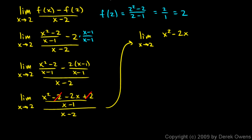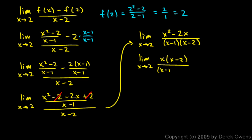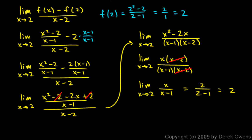The negative 2 and plus 2 cancel, leaving x squared minus 2x in the numerator. The denominator combines to (x minus 1)(x minus 2). The numerator factors as x(x minus 2), so the limit becomes x(x minus 2) over (x minus 1)(x minus 2). The (x minus 2) terms cancel, leaving the limit as x approaches 2 of x over (x minus 1), which equals 2 over 1, which is 2.